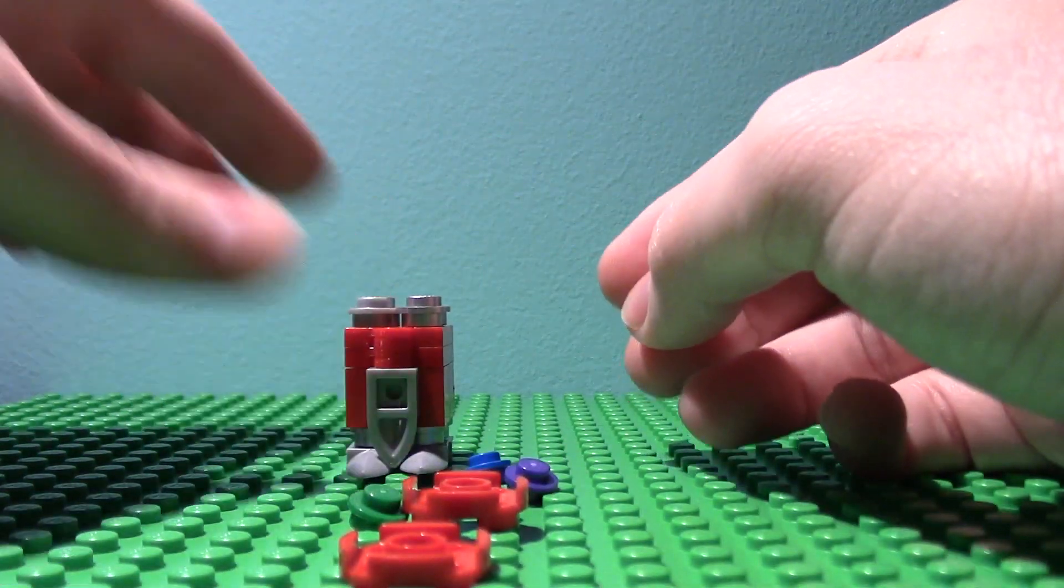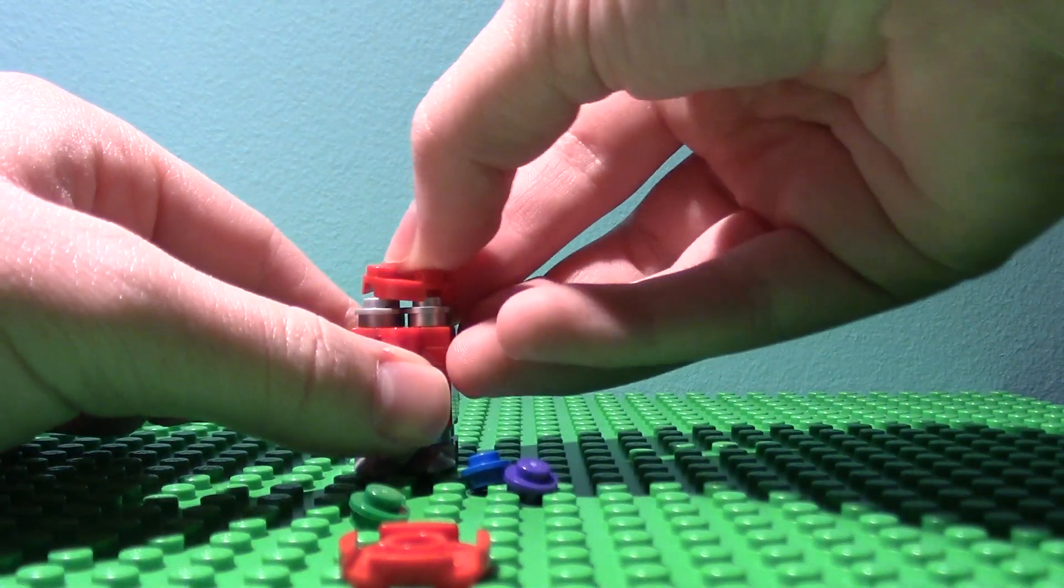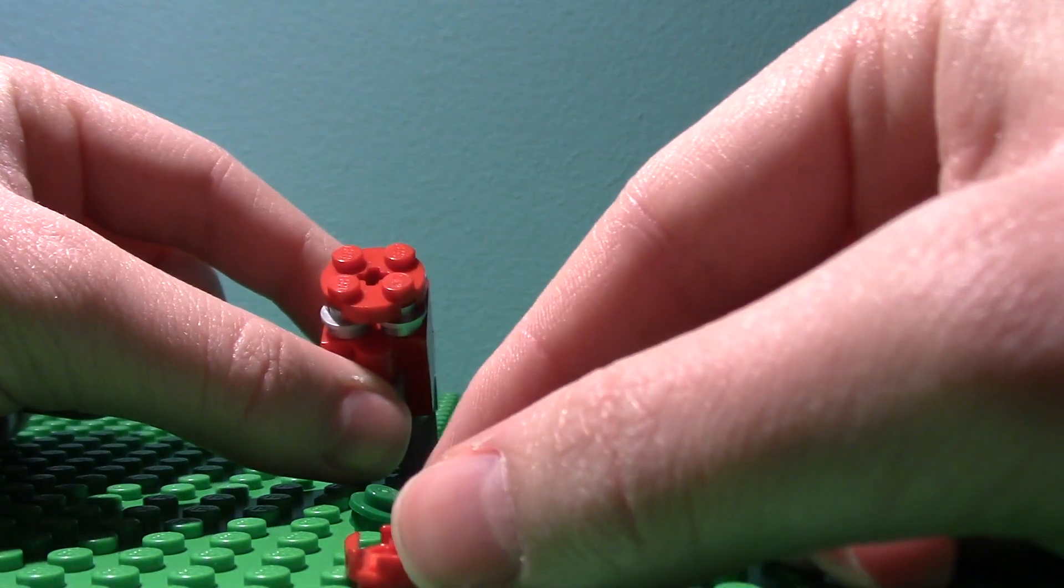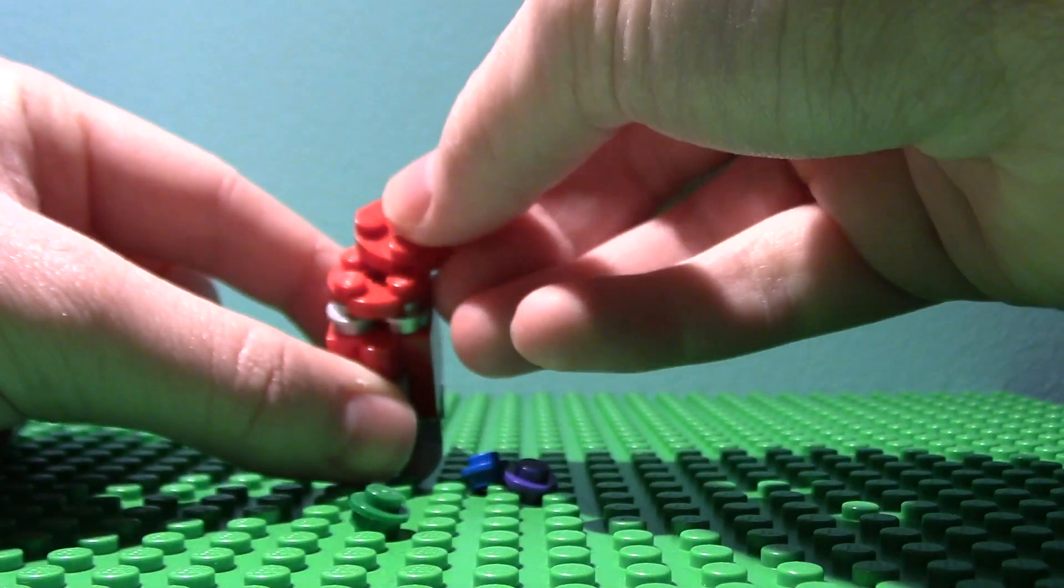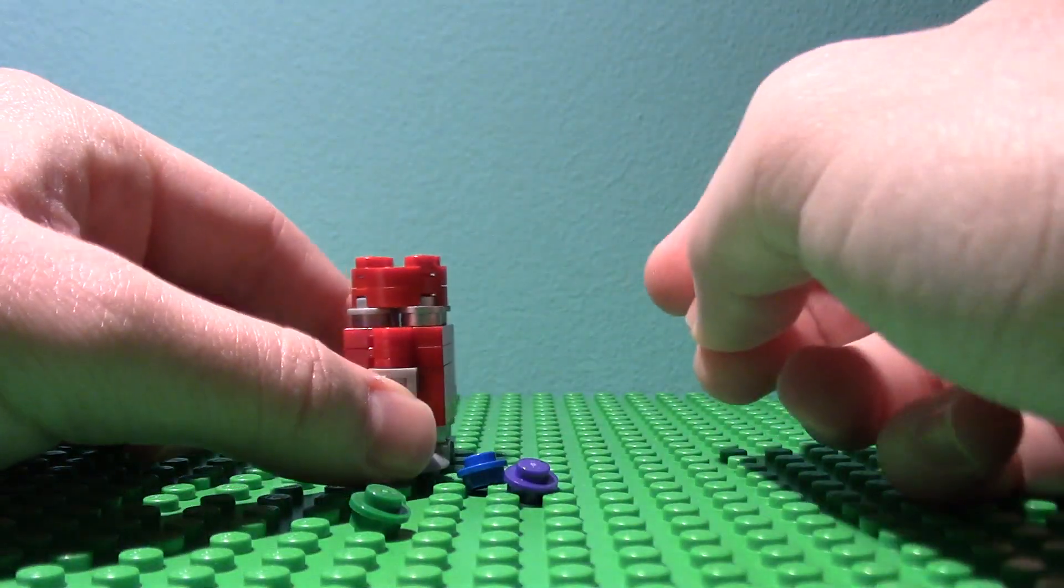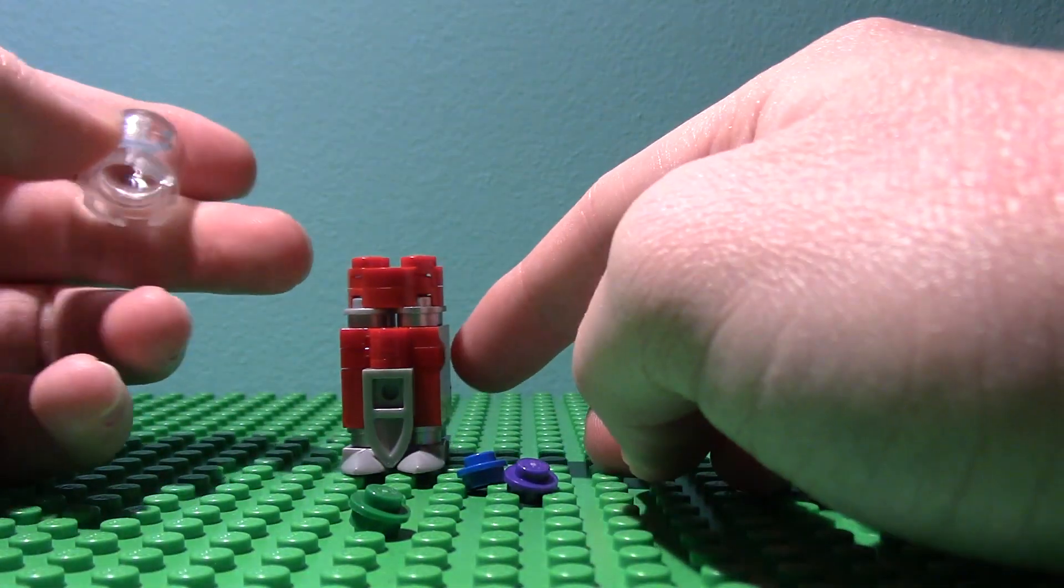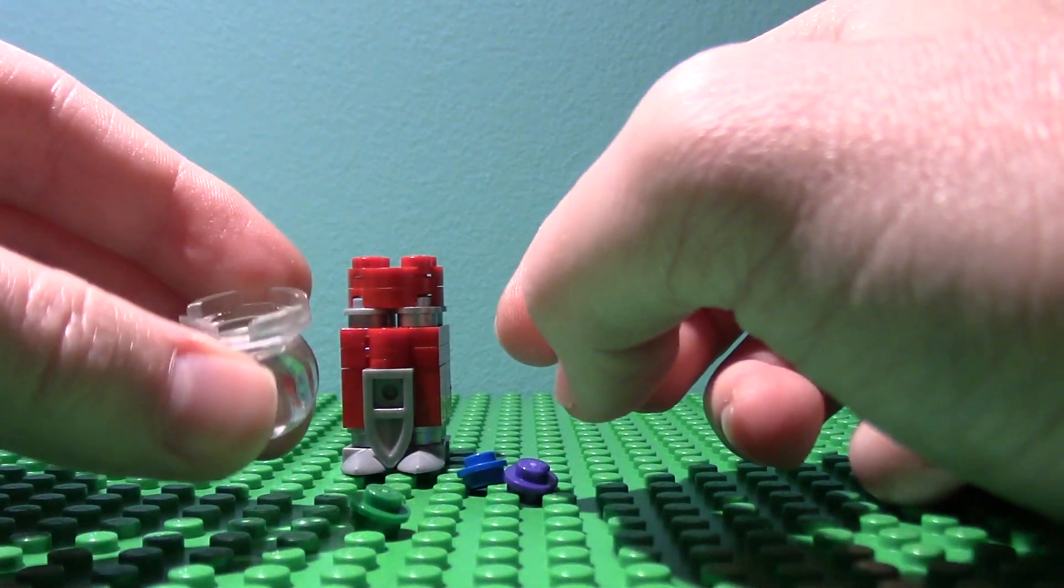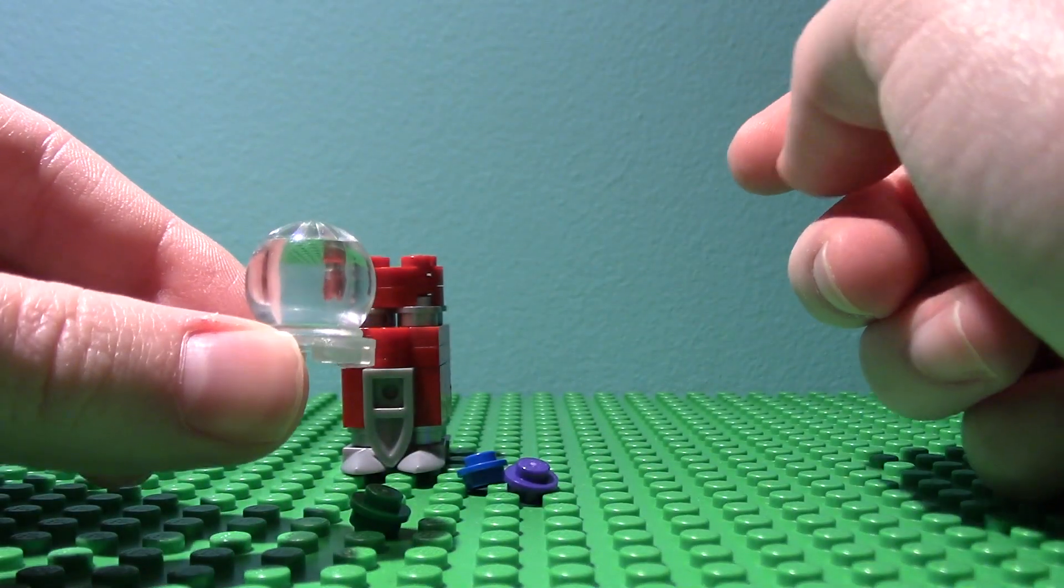Then you're going to want to put 2x2 plates there. I put two round plates there, you can put just normal square ones. Then you want to get this dome piece.